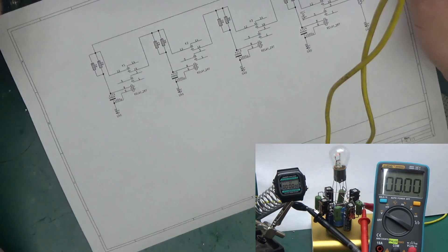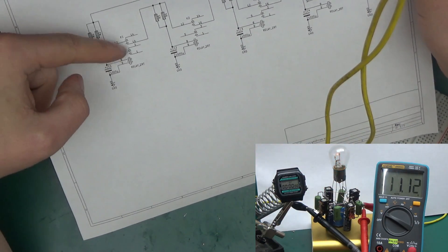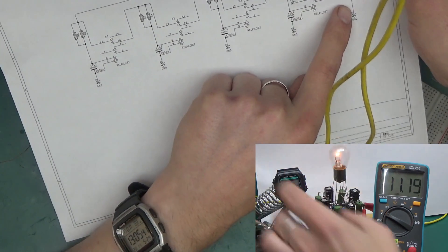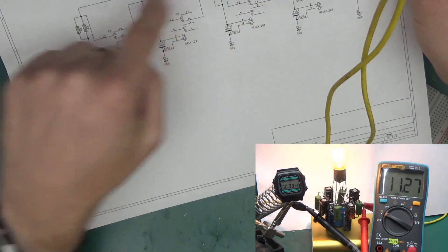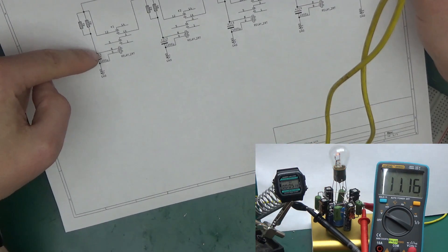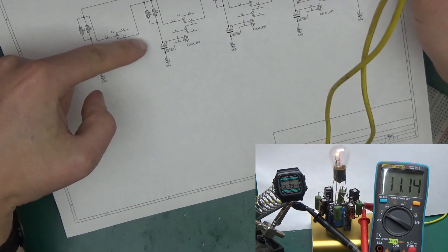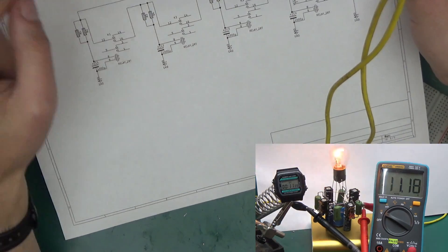This should basically oscillate. As soon as it reaches the last relay it will switch on the light bulb, but at the same time it will kill the power to the first one. So as soon as the capacitor discharges, it will switch off this one, then this one, then this one, and so on.